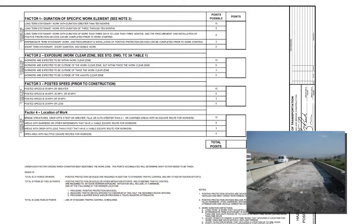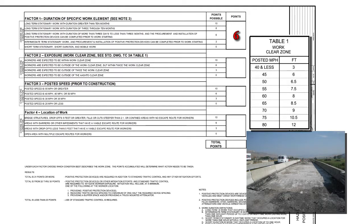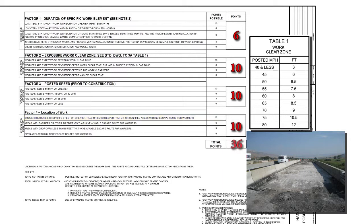Let's take a look at this scenario as shown on the bridge deck rehab operation photograph. This project may take up to one month to complete. Knowing that the project will take a month, we will choose long-term stationary work with duration of more than 3 days to less than 3 months — 6 points. What is the exposure of the worker? This roadway has a posted speed of 70 miles per hour for a work clear zone of 9 feet. That being the case, we would choose workers are expected to be inside the work clear zone for 10 points. Next, the posted speed of 70 miles per hour for 10 points. Factor 4, location of work: this is a bridge structure with drop-offs of 5 feet or greater with no escape routes for the workers — 10 points. Now we have 36 accumulated points.